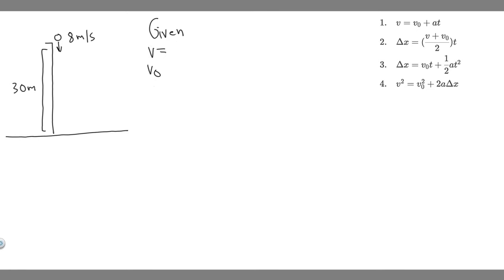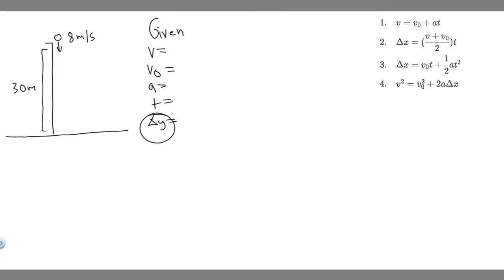So we have V, V sub zero, A, T, and delta X. These are the variables in the kinematic equations that we're going to use. We can write delta X or delta Y since the ball is traveling in the Y direction.